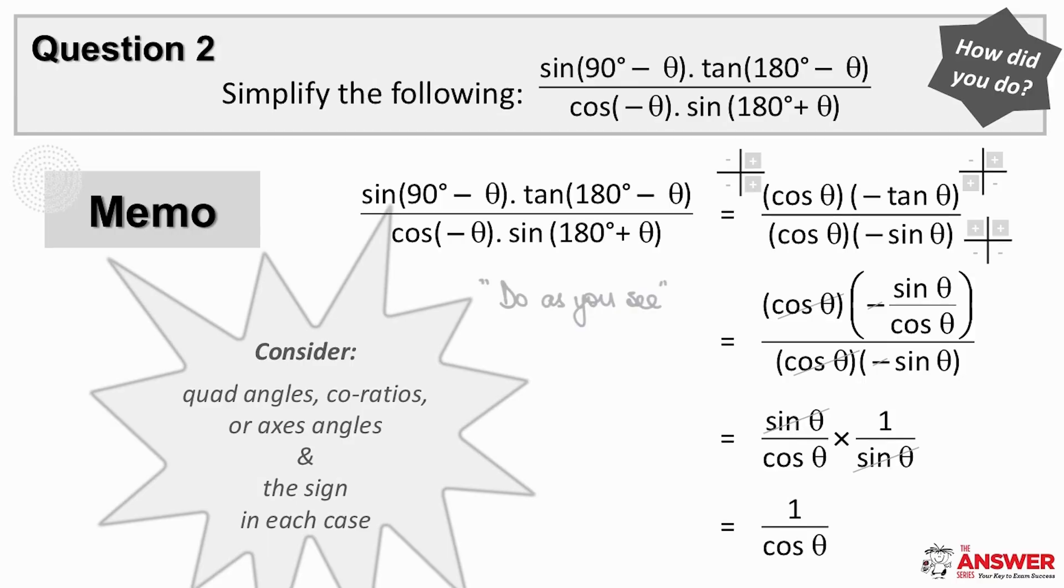Here the do as you see approach means apply co-ratios where you see 90 minus or 90 plus theta, apply quad angles where you see them and replace ratios of axis angles with their values.